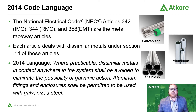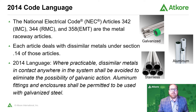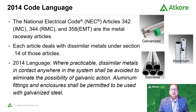In the National Electrical Code, Articles 342 for IMC or Intermediate Metal Conduit, 344 for rigid metal conduit or RMC, and 358 for Electrical Metallic Tubing or EMT are the metal raceway articles. These articles are all set up identically and have similar code language. Each article deals with dissimilar metals under section dot 14 of those articles. So for instance, 344.14 would be the dissimilar metal section for rigid metal conduit. The dissimilar metal sections all read the same in the 2014 code language, and then 2017 and 2020.